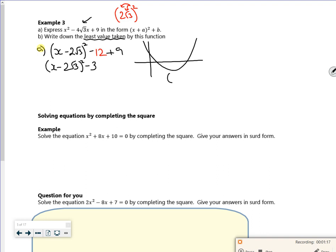where the vertex is 2 root 3 comma minus 3. So the least value taken is its minimum function. So what it wants is its minimum value. And that is y equals minus 3, this part here. That's the minimum value of it.